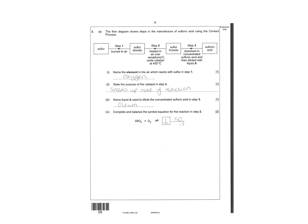Name the element in the air which reacts with sulfur - that's oxygen. State the process of catalyst speeds up the rate of reaction without being used up itself. Name liquid A used to salute concentrated sulfuric acid - it's going to be water and that's used to make the oleum.